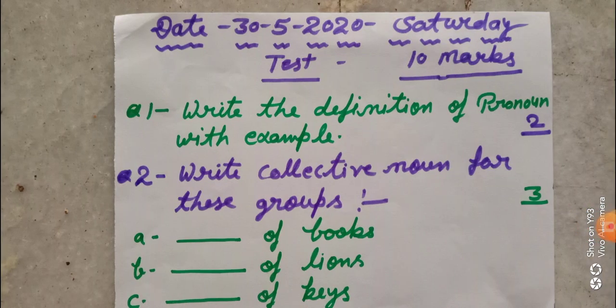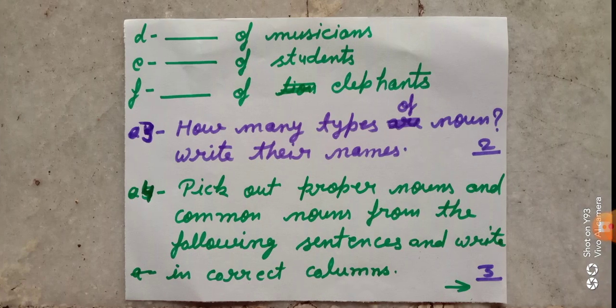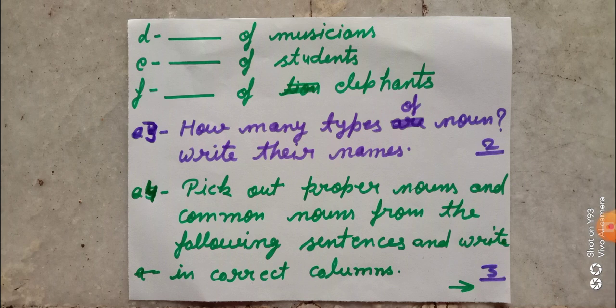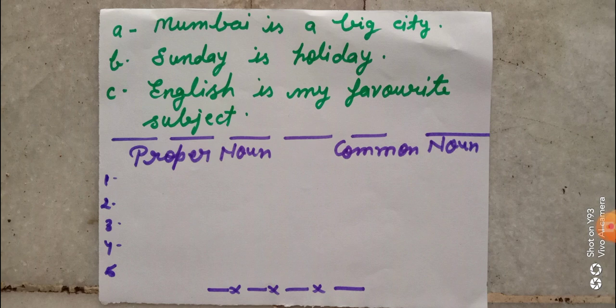Once again I am telling you: In question number one you will write the definition of pronoun with example. In question number two you will write collective nouns for the given groups. In question number three you will write how many types of nouns there are. In question number four you will find out proper nouns and common nouns from the three sentences — in sentences mein se common aur proper noun ko find out karna hai aur unhe respective columns mein likhna hai.